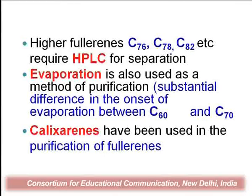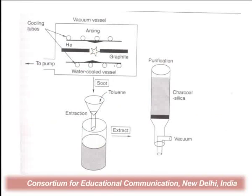Higher fullerenes can also be extracted using the HPLC separation method, such as C76, C78, and C82. The evaporation method is also used for purification of C60 and C70, while for getting higher fullerenes, we use HPLC separation. This is the separation method by which we purify different C60 and C70 molecules from the soot particles to obtain purified fullerenes.